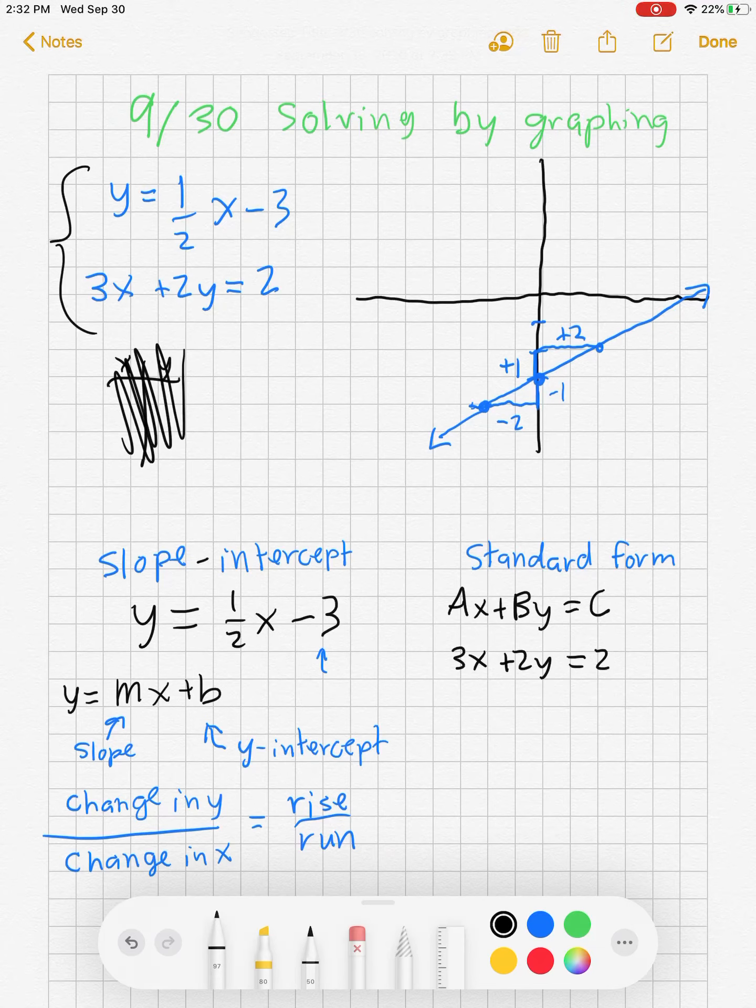In this case, our standard form is 3x plus 2y equals 2. Now to graph an equation in standard form, we have two options. We could rewrite this into slope intercept form, or we could graph it straight from here. I'm going to just quickly show you how to take it into slope intercept form. I'm not going to spend a lot of time on this, and I'm probably not even going to use it, but I'm just going to demonstrate it just in case. We end up with 2y equals 2 minus 3x. Divide by two. We get y equals negative three halves x plus one.